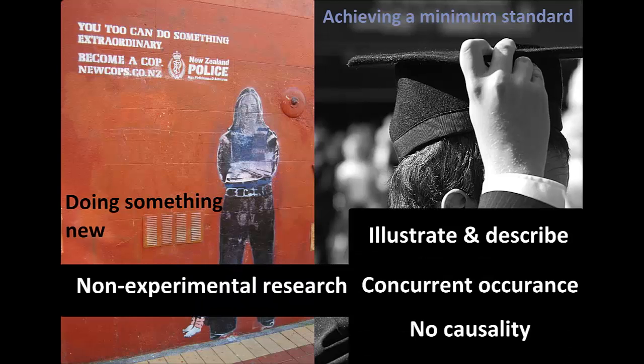Non-experimental research can illustrate that something took place and also describe the details of it. It can also tell you whether this occurrence is associated with the occurrence of something else, for example your program activities. Although it might allow you to say that two or more things are happening at the same time, non-experimental research cannot say that one of these things caused the other to happen.